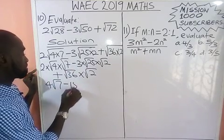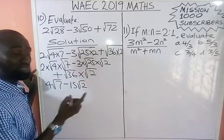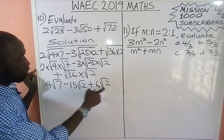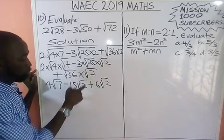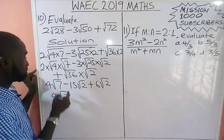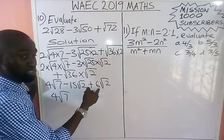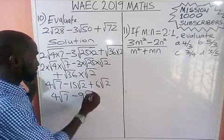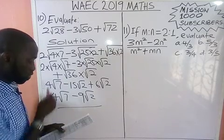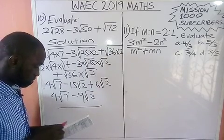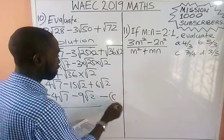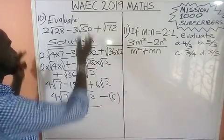The root of 25 is 5, so 5 times 3 gives us 15. We have minus 15√2. The root of 36 is 6, so we have plus 6√2. These are similar surds — same number under the root — so we combine: 4√7 and then negative 15 plus 6 gives us negative 9, so the answer is 4√7 minus 9√2. The correct answer is option C.